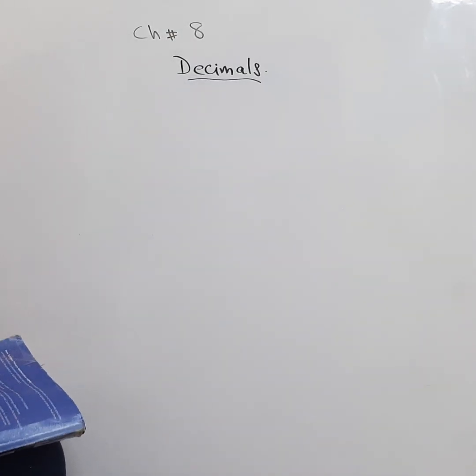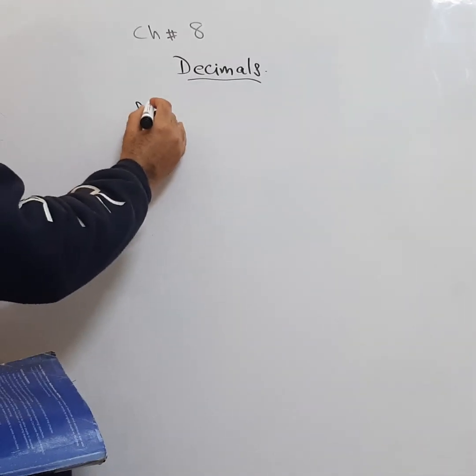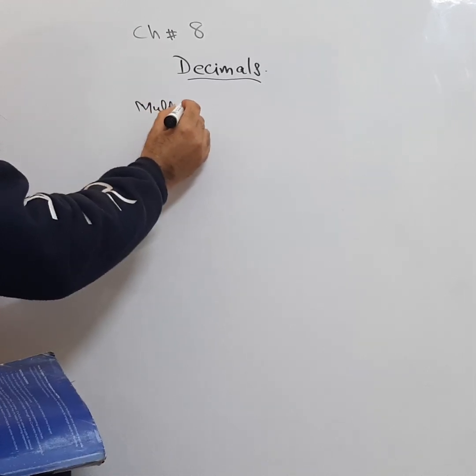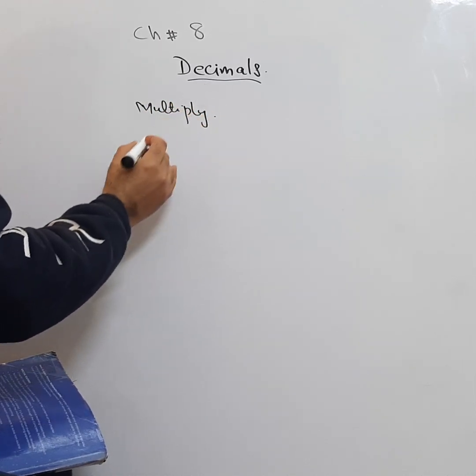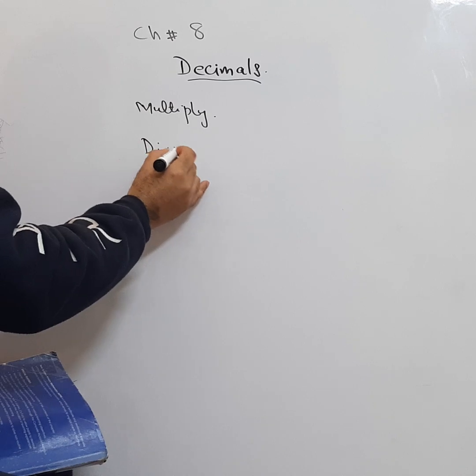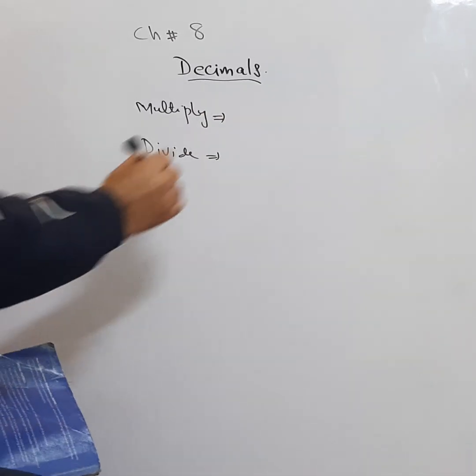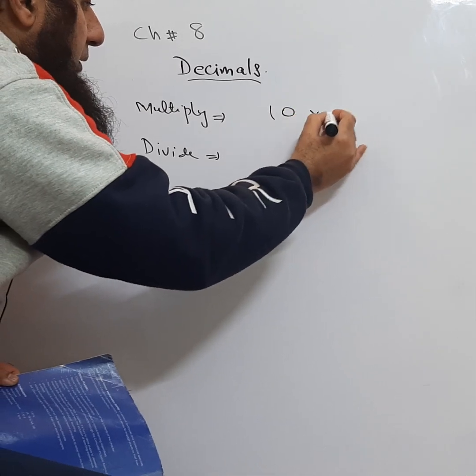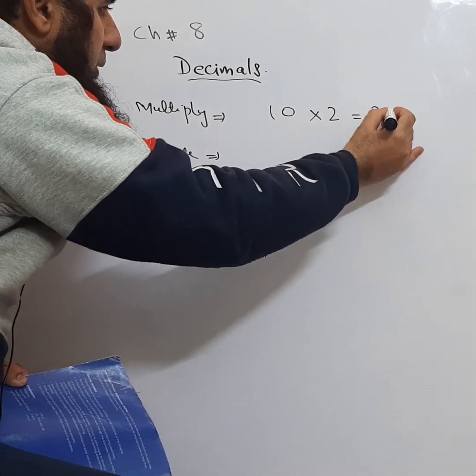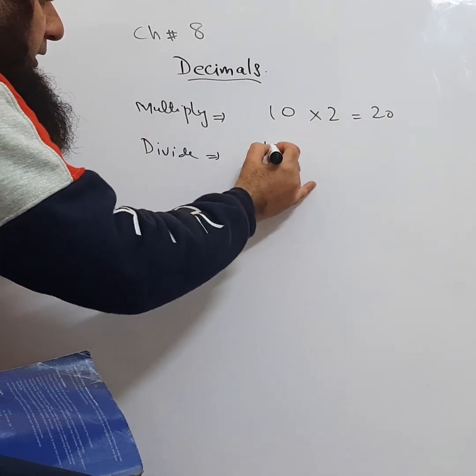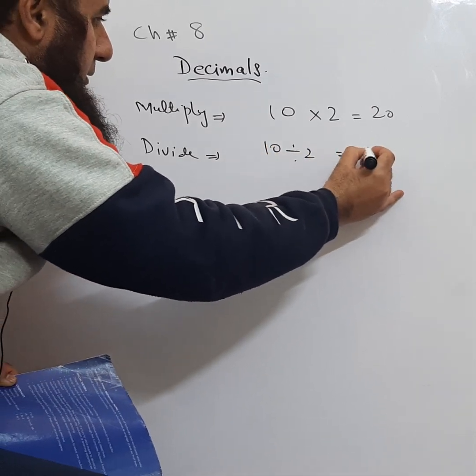For the first two topics, you need to understand one thing: when we multiply what happens and when we divide what happens. See, if we multiply 10 by 2, it becomes 20. If we divide 10 by 2, it becomes 5.